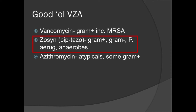Atypicals aren't typically part of HCAP coverage, but azithromycin is often added. There is a lot of resistance for strep pneumo to azithromycin, so it may not be the best monotherapy. For COPD patients with pseudomonas risk factors — frequent steroids, severe disease — IDSA guidelines actually recommend double pseudomonal coverage, potentially adding a quinolone. But if someone has a penicillin allergy, we can't give Zosyn.